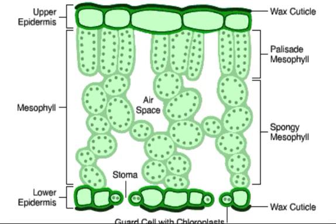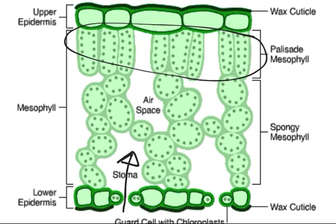Carbon dioxide goes through the stoma up to where the palisade cells are. These cells have loads of chloroplasts. This is where photosynthesis occurs. Then oxygen, a by-product of photosynthesis, is diffused out of the leaf through the stoma.